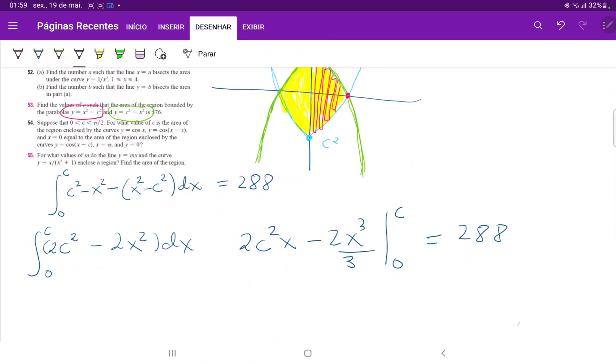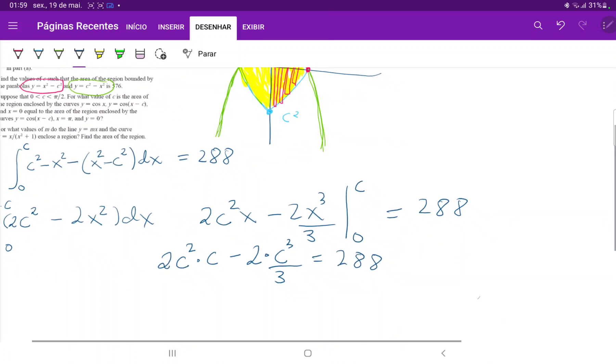So let's plug in our variables, our boundaries, right? And we're not going to plug in the lower boundary because then it's just going to disappear. It will tend to 0. So let's plug in c. So this is 2c² · c - 2c³/3. And this is equal to 288.